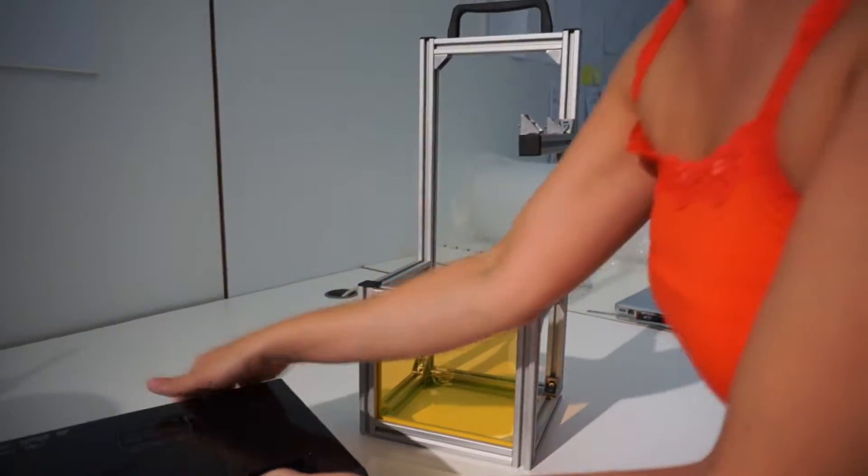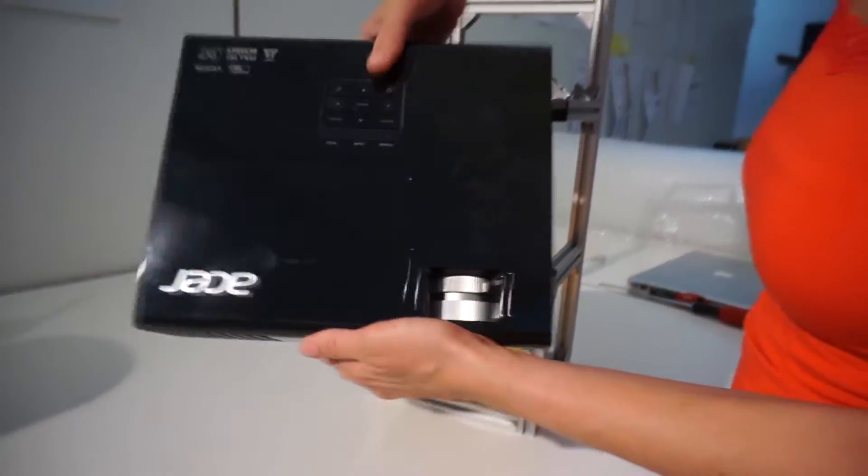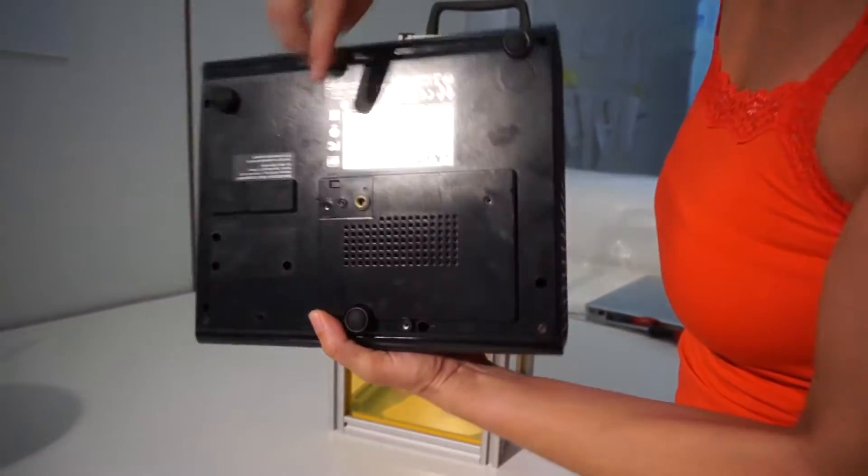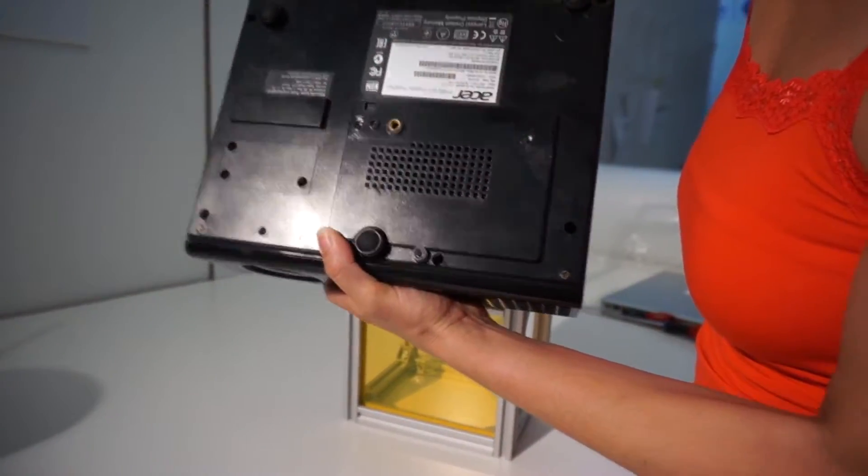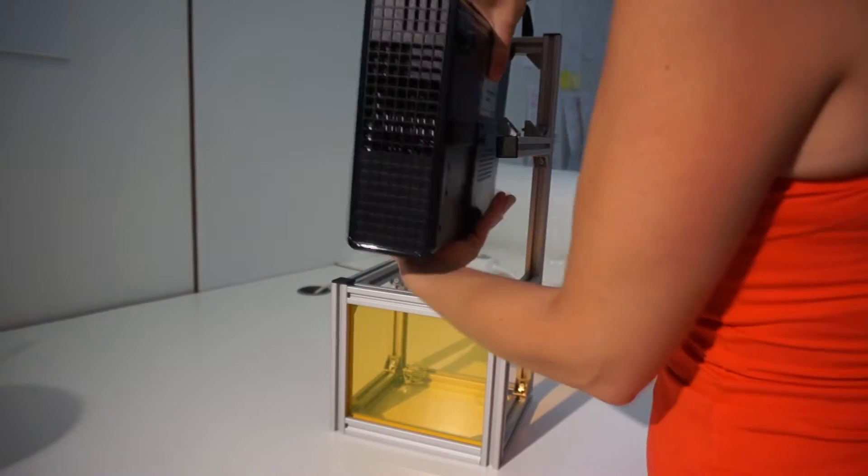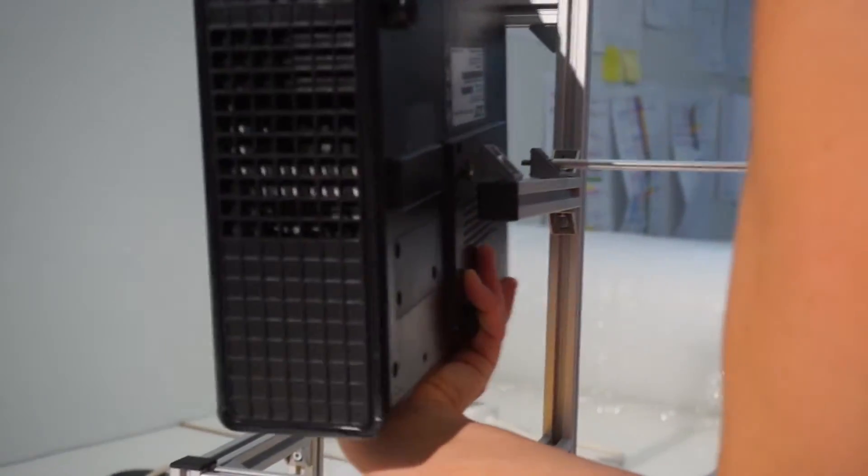On the bottom of the projector you will find two screw holes. Put the projector vertical with the bottom on the side of the docking station arm.